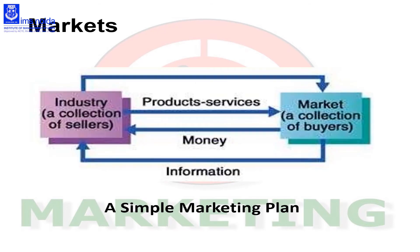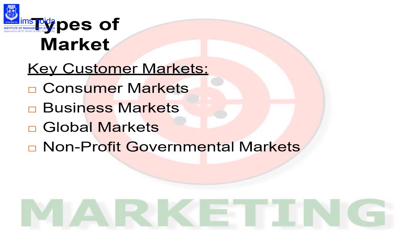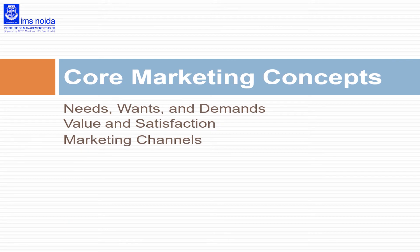What are the different types of markets? An industry is a collection of sellers who provide products and services to the market. A market is a collection of buyers who provide money to the industry. The market provides information to the industry, according to which the industry provides products and services back to the market. Types of key customer markets include: consumer markets — those purchasing goods for final consumption; business markets — those purchasing goods to make another product to sell further; global markets — selling products at a global level; and non-profit or governmental markets — organizations selling products for people without a profit objective.